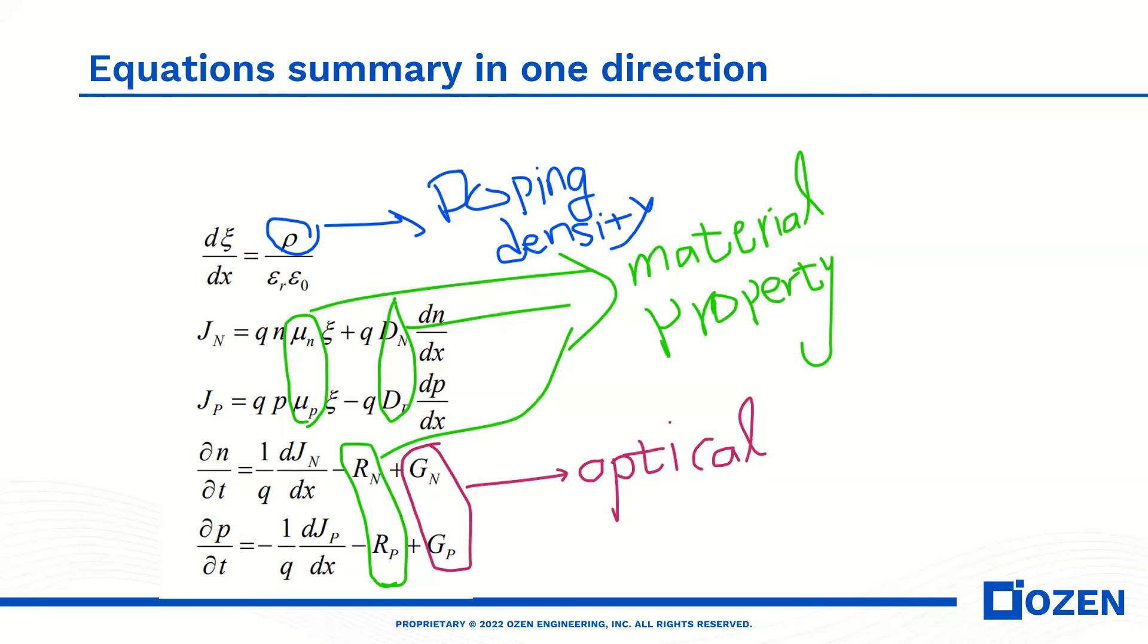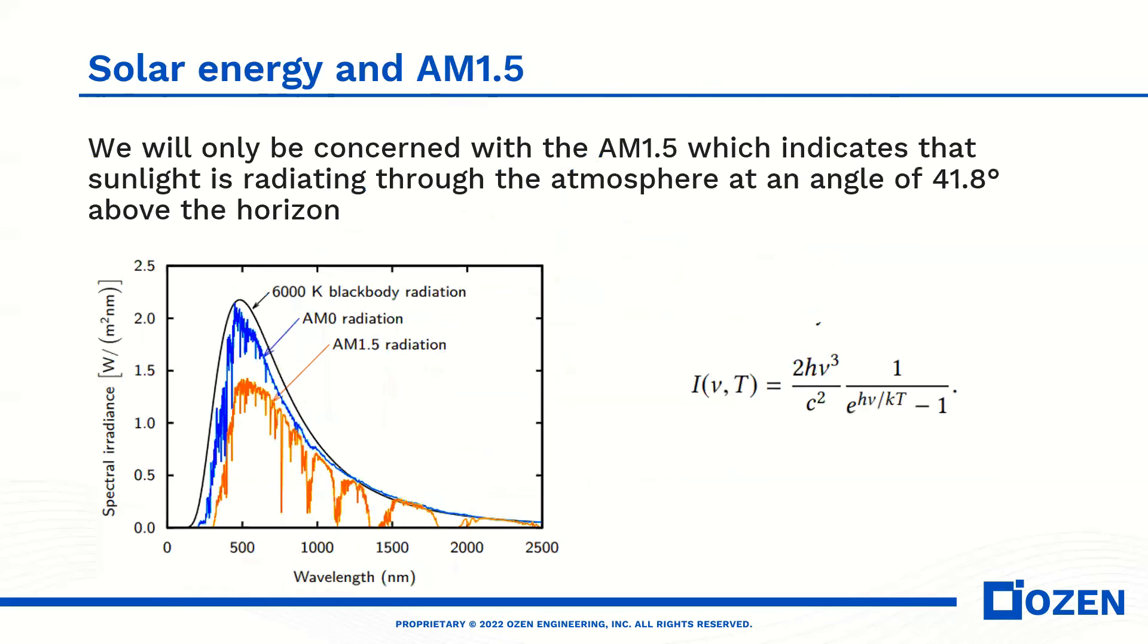For the solar energy we use AM 1.5 which indicates that the sunlight is radiating through the atmosphere at an angle of 41.8 degrees above the horizon. You see here the spectrum of solar energy that we will consider in our calculation compared to blackbody irradiation that is governed by these equations. We see that spectral irradiance is lower than the blackbody irradiation because the sun comes through the atmosphere.